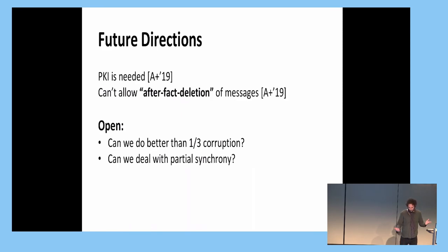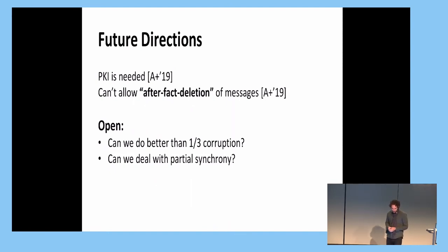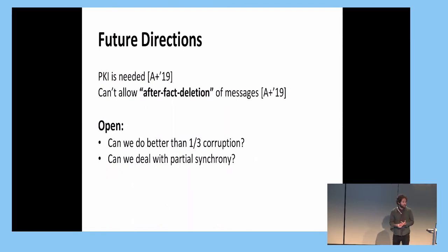Some open questions: the natural question is whether we can do better than one-third corruption. We believe one should be able to get it up to one-half. Another direction is to deal with partial synchrony. We have also shown that a PKI is necessary — you cannot remove it — and stronger corruption models are actually not possible.